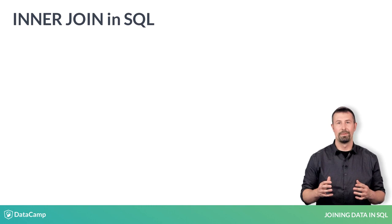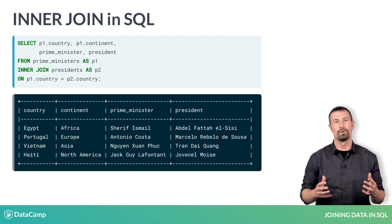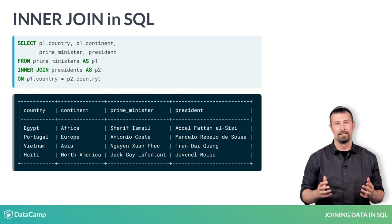The syntax for completing an inner join from the prime minister's table to the president's table based on a key field of country is shown. Note the use of aliases for prime ministers as P1 and presidents as P2. This helps to simplify your code, especially with longer table names like prime ministers and presidents. A select statement is used to select specific fields from the two tables. Since country exists in both tables, we must write P1 and the period to avoid a SQL error.